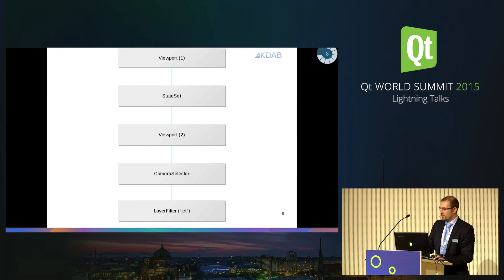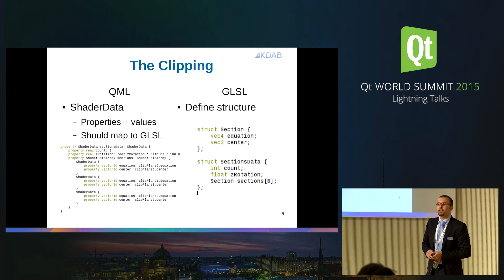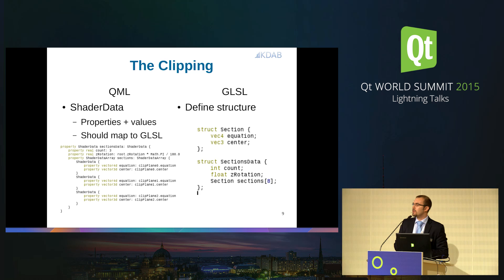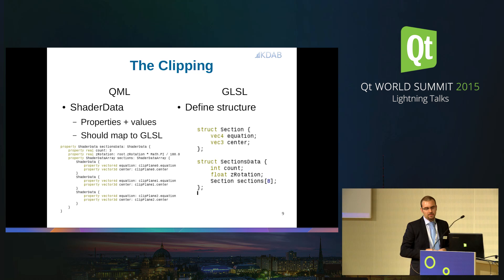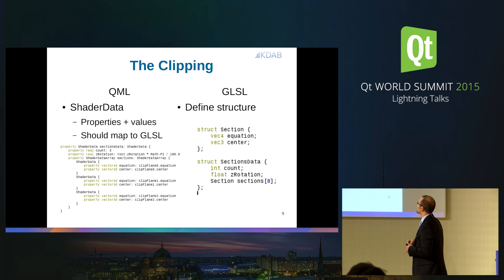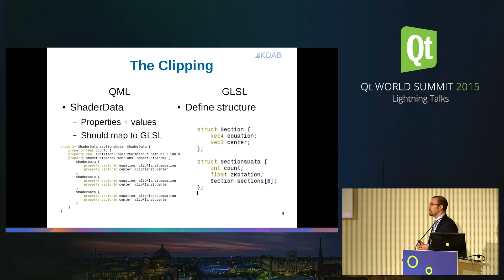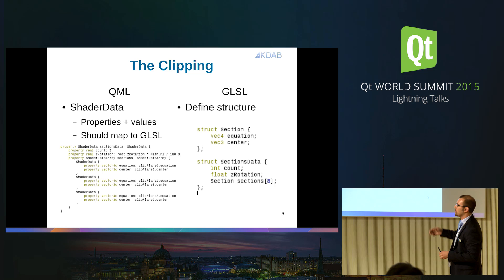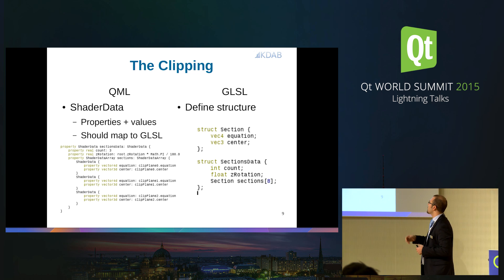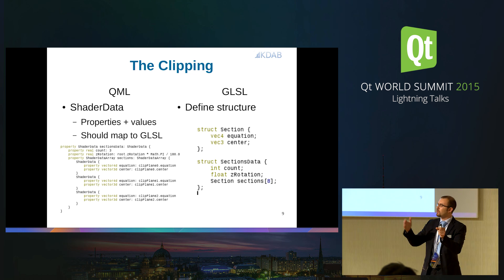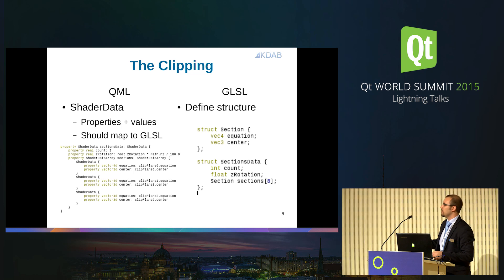Now for the interesting part — the actual clipping. How does that work? First, we've got a shader. A shader is a program that is executed on the graphics card for every pixel. For that program we define a structure: a 'section' and a 'section data'. Section defines our clipping plane — it has a center and an equation. SectionData contains several of those sections. In the program, given the equation and the center, we can detect if our pixel is in front of or behind the plane, and decide either to show it or discard the pixel.